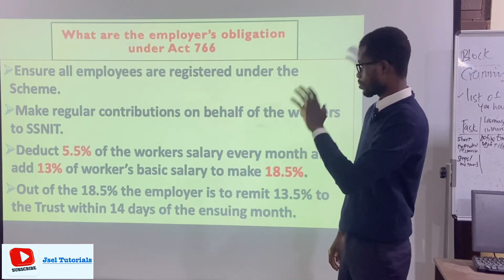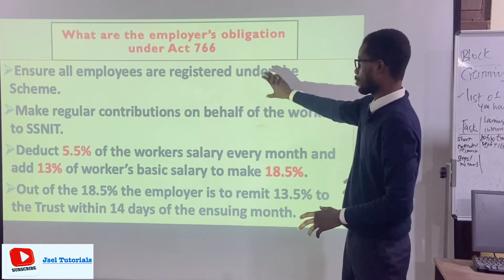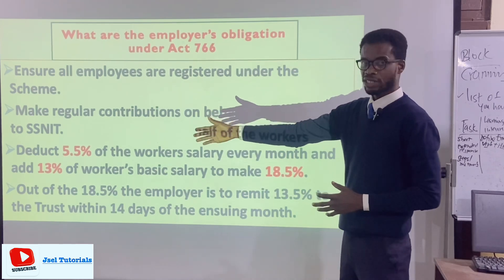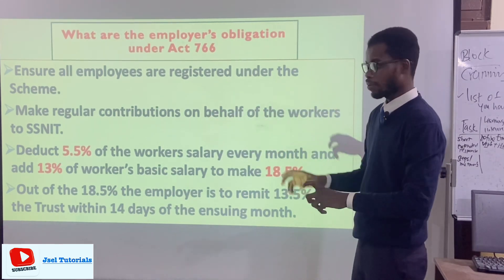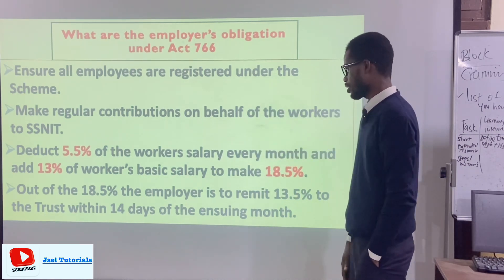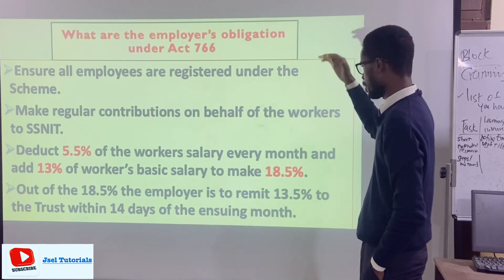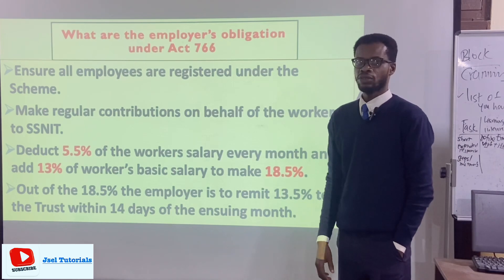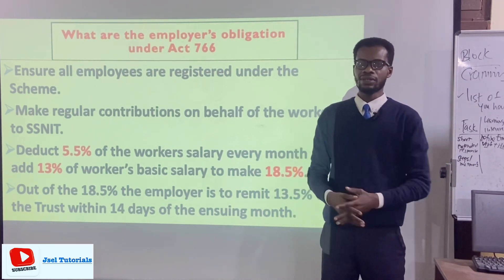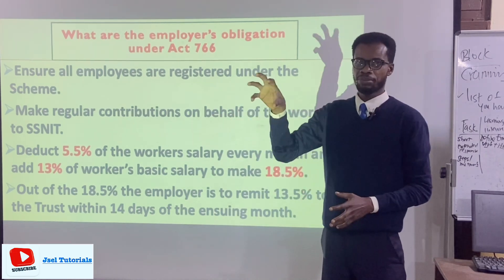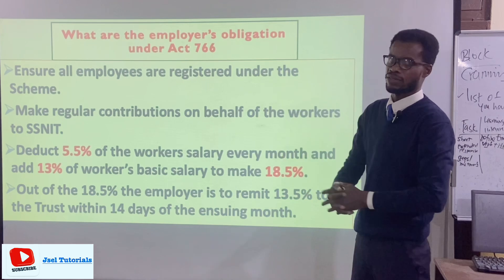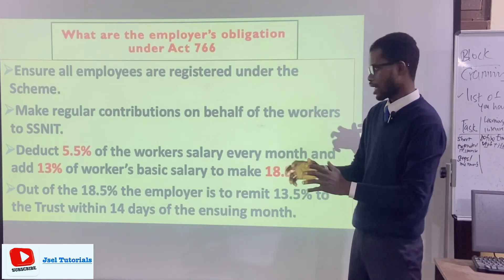The employer must make regular contributions on behalf of the workers to SSNIT. It is a monthly contribution: he deducts 5.5% of the worker's salary and adds 13% of the worker's basic salary — the basic salary being what the worker takes home — to make a total of 18.5%. So if he is paying a worker one thousand, three thousand, or ten thousand cedis, he calculates the percentages accordingly.